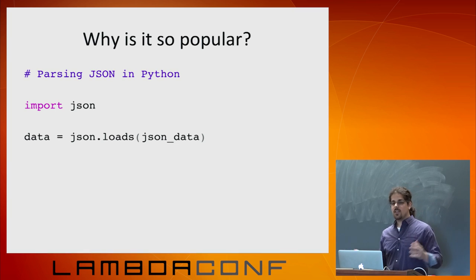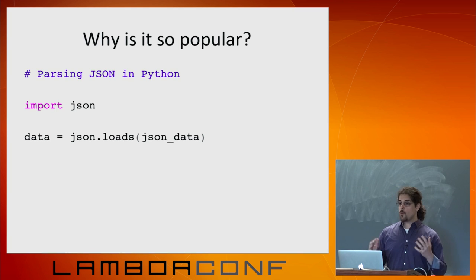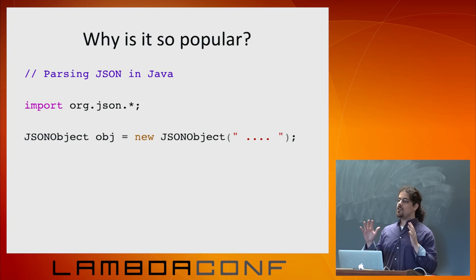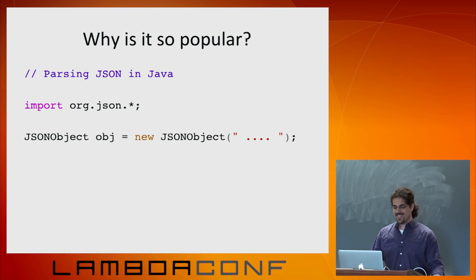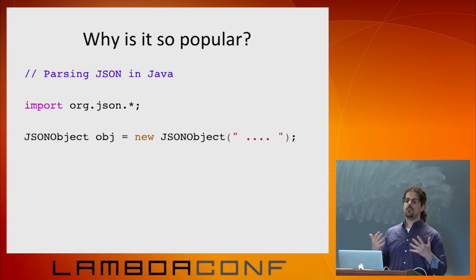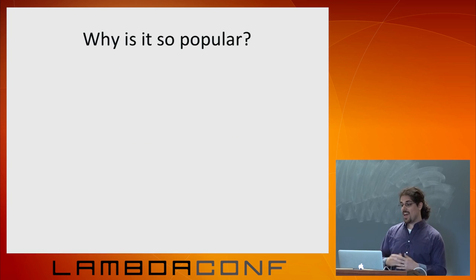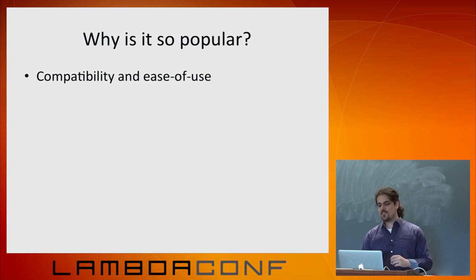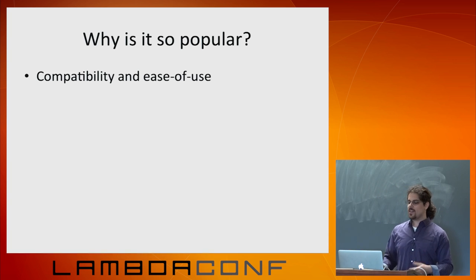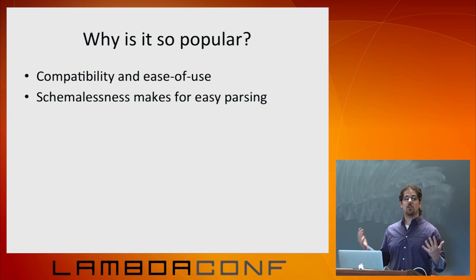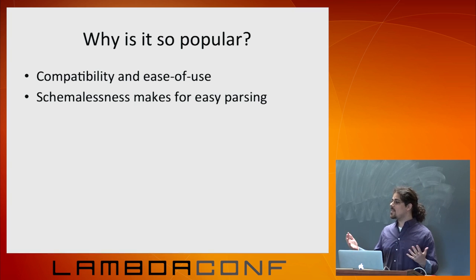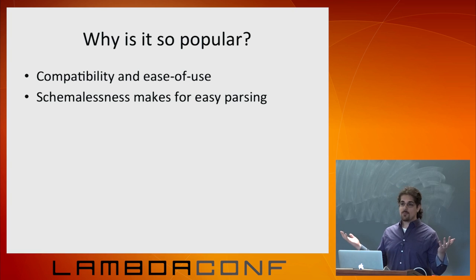At this point you're probably thinking, 'David, you're cheating — Python is known for being terse and batteries included. What about the worst case, Java?' Actually, I didn't know it was possible to be this brief in Java — there's no factory. So they put some focus into the API and the user experience. It's really easy to use, compatible with everything. The schema-less nature makes it easy to parse and deal with in our applications — we don't have to worry about unanticipated input because we can ignore it.